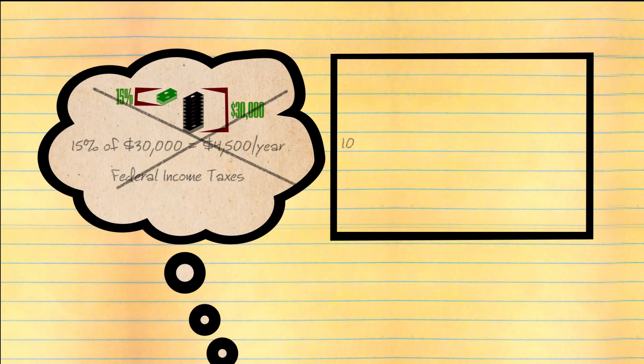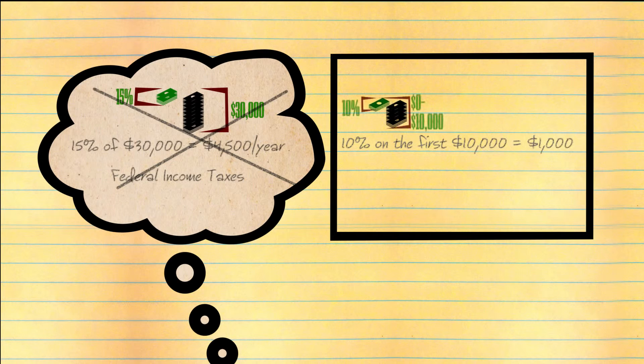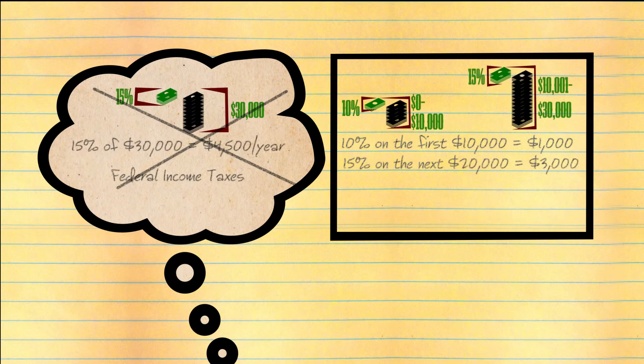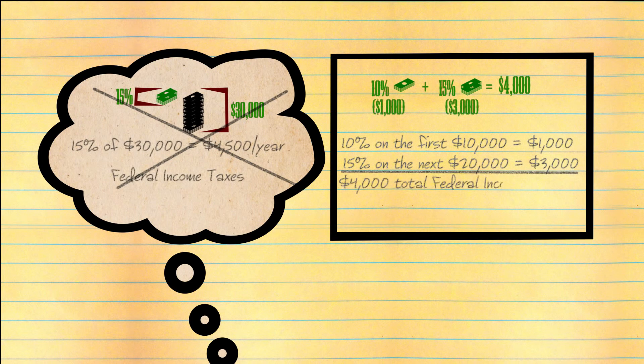However, he was really only paying 10% on the first $10,000, which is $1,000, and 15% on the next $20,000, which is $3,000, giving him a total of $4,000 in federal income taxes.